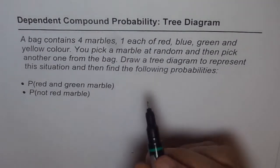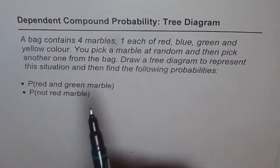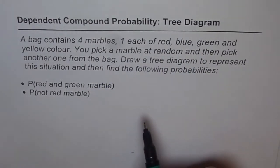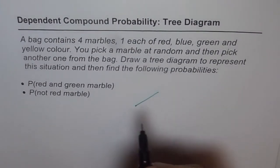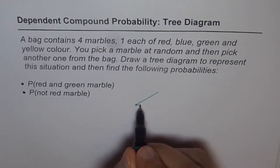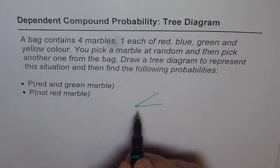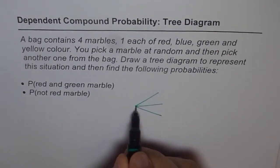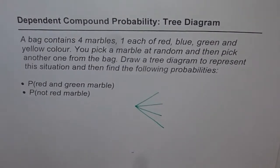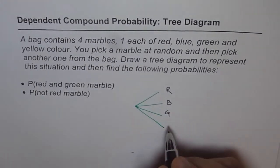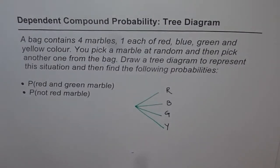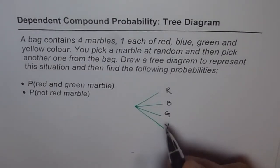There are four marbles — red, blue, green, and yellow. You pick a marble at random, so you could pick either one of these four marbles. It could be red, blue, green, or yellow. So these are your four options when you pick up: you could get red, blue, green, or yellow. They are all equally likely — either one of them you could get.